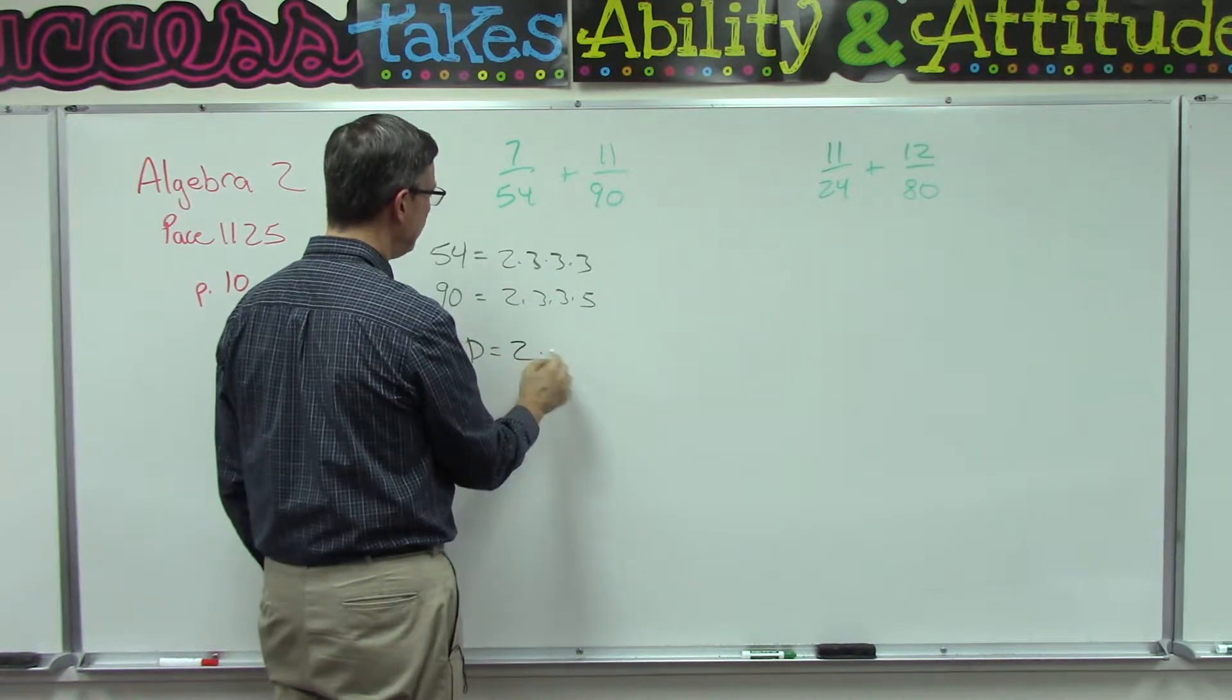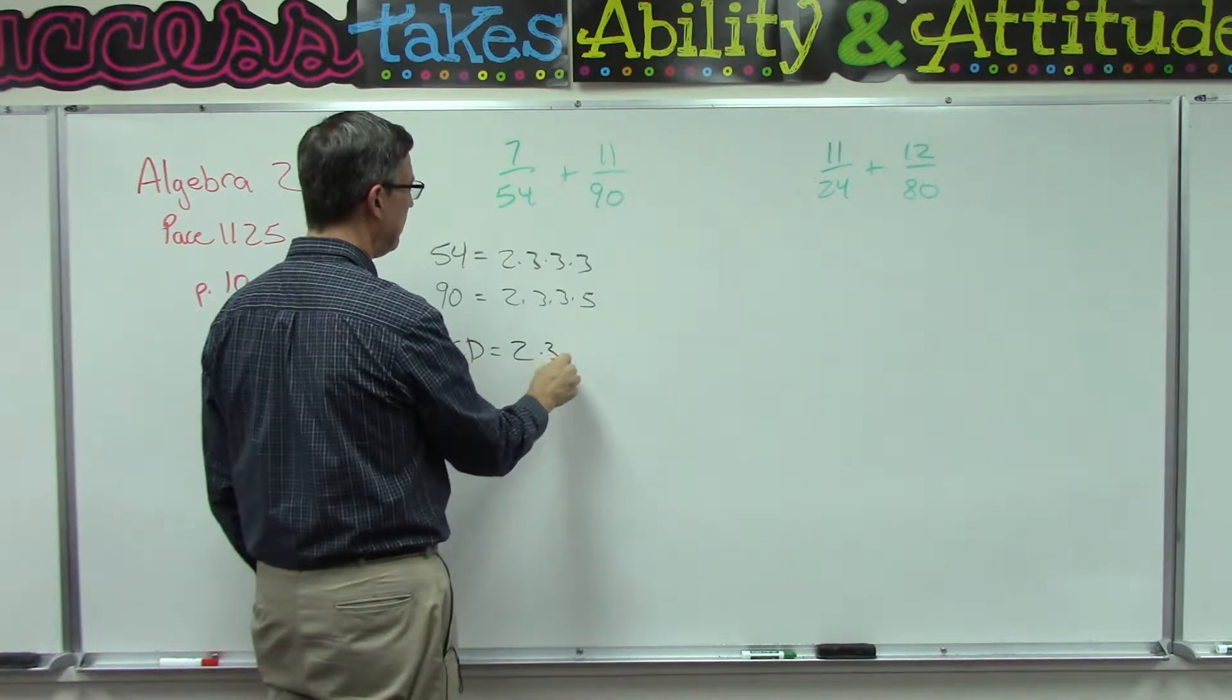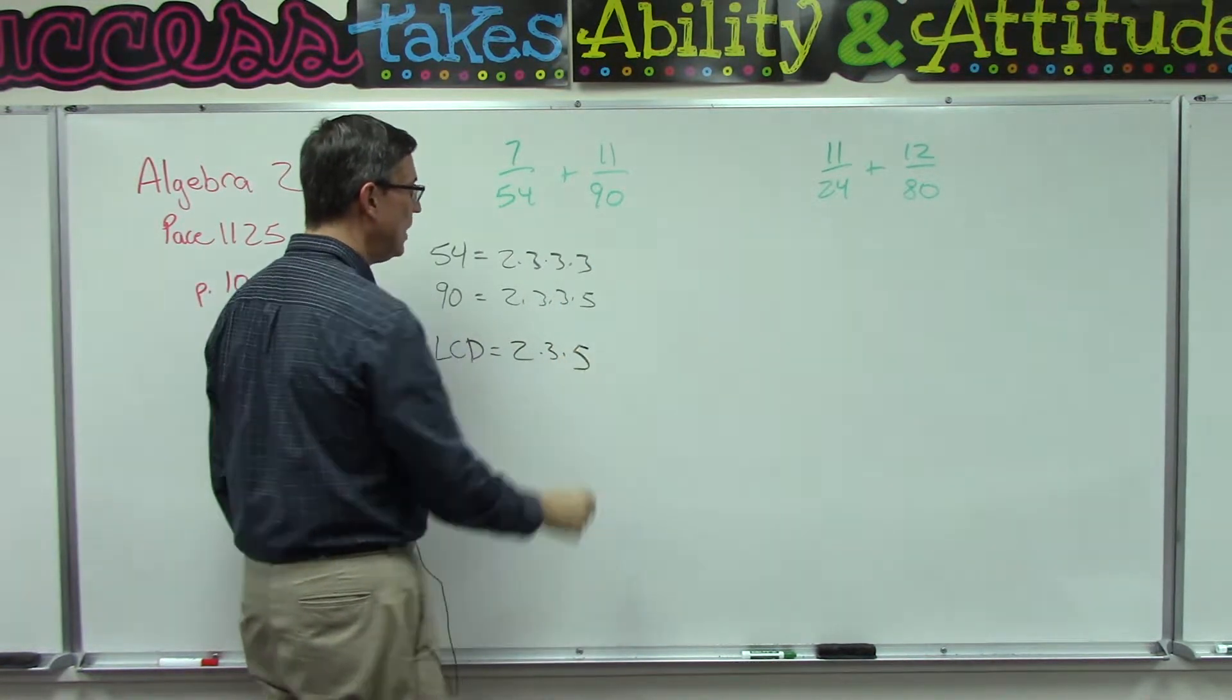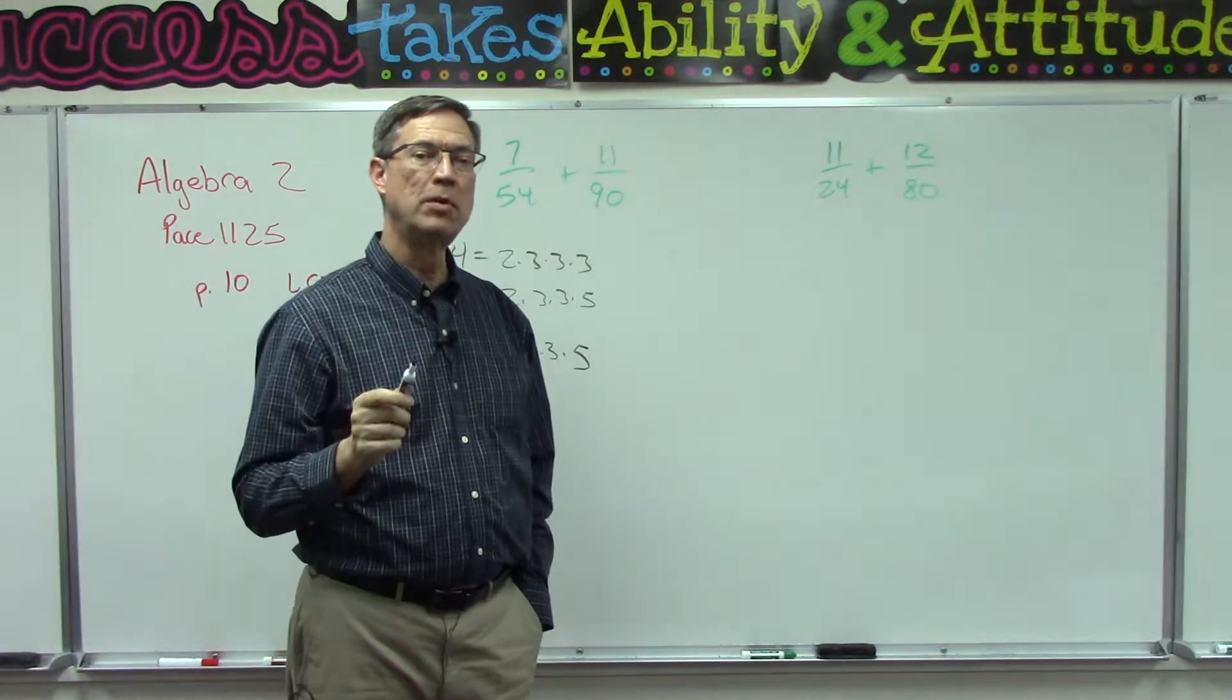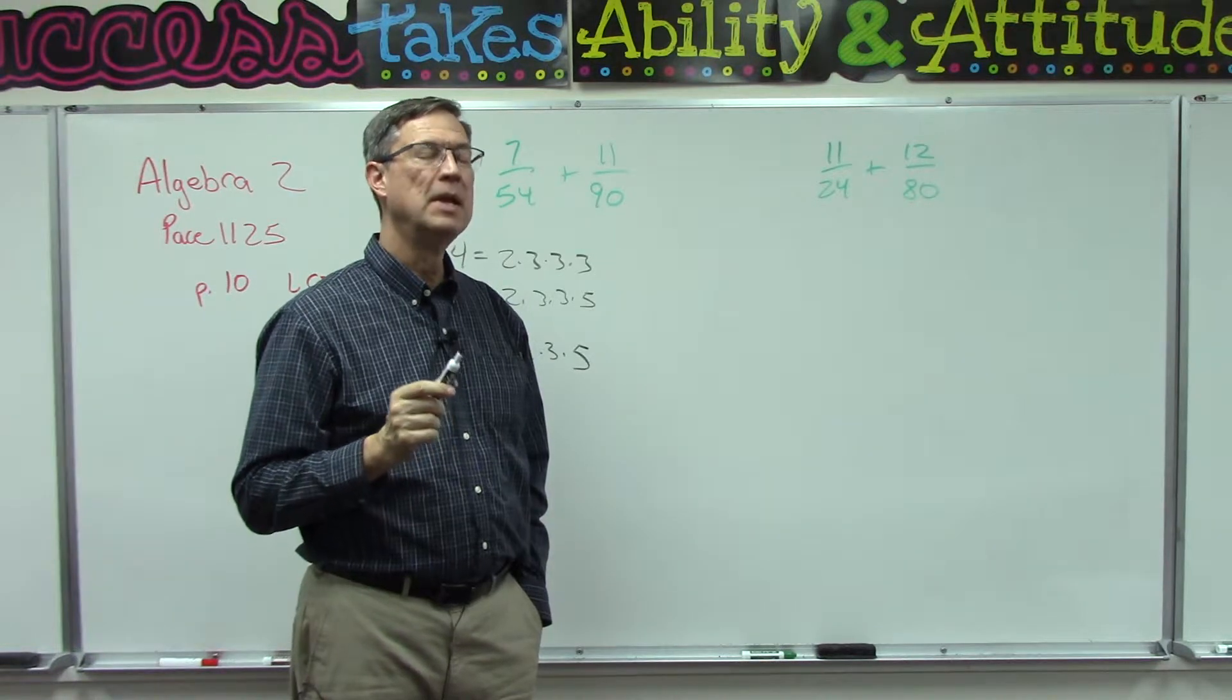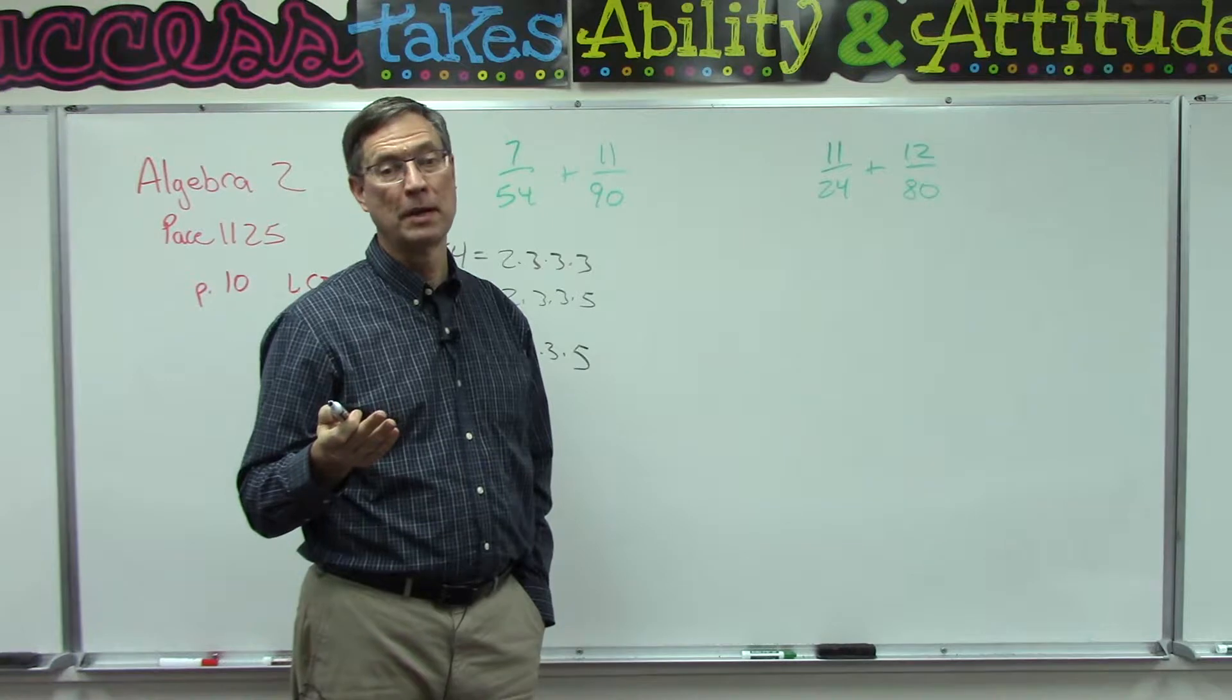Number one is you're going to write down every single number that's used as a factor in either of these numbers. So I'm looking up here and 2 is used in both of them, so I'm going to write down 2. 3 is used here and it's used here. 5 is not used in this one but it is used in this one, so I've written down every number that's used as a factor in either one of the numbers.